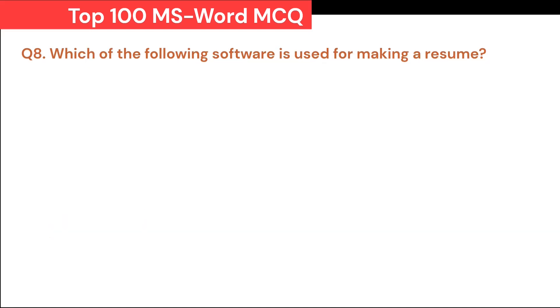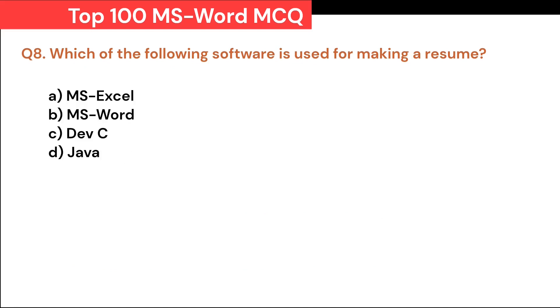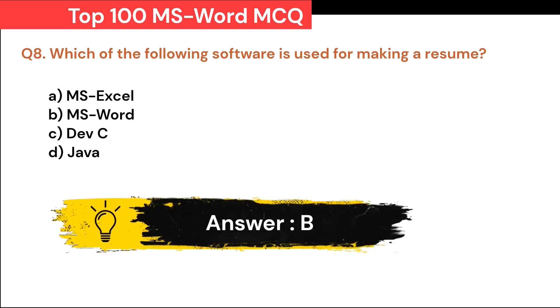Which of the following software is used for making a resume? A. MS Excel. B. MS Word. C. Dev C. D. Java. Correct answer is B. MS Word.